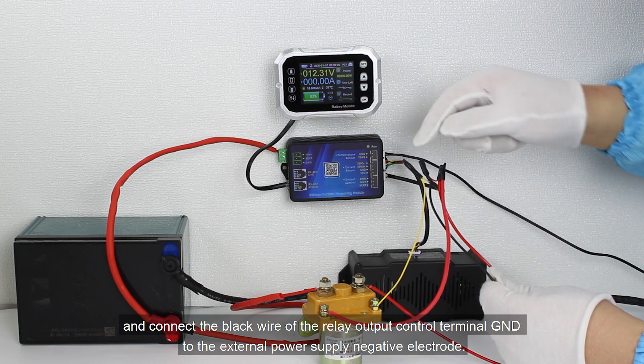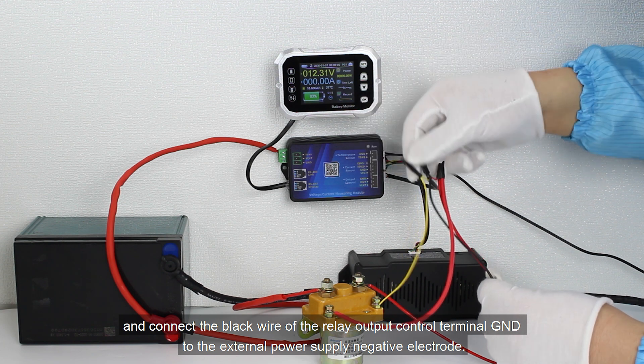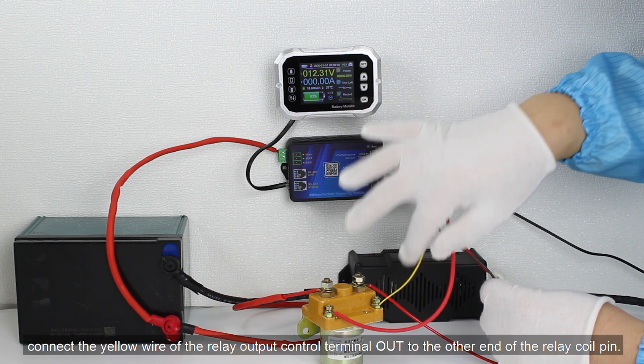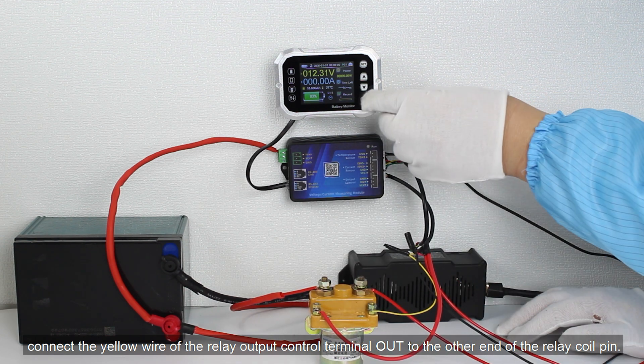And connect the black wire of the relay output control terminal GND to the external power supply negative electrode. Then, connect the yellow wire of the relay output control terminal out to the other end of the relay coil pin.